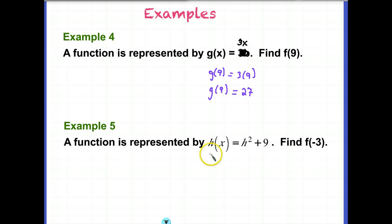So our function g when x is 9 is going to be 27. 3 times 9 is 27. And our final example, evaluate this function, h(x) = h² + 9 when x is -3. That's what that one is saying.